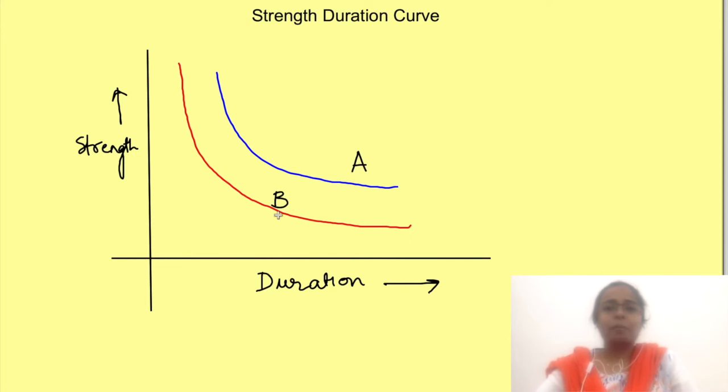Okay here B represents more excitable tissue. See if for any particular duration we check the strength of current required, so I will draw a line from here to the graphs and then draw a line from here to the current required. So we see that here B requires less strength. So obviously lesser charge is excitatory to B and hence it is more excitable.